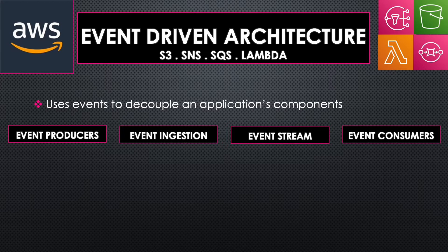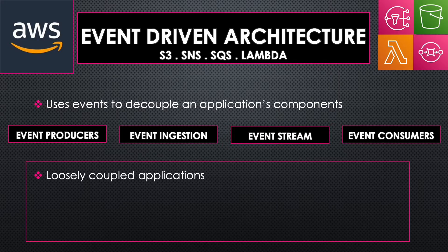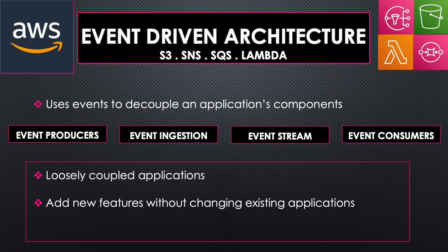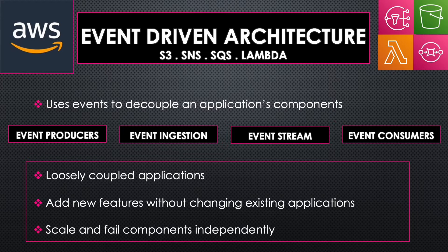You can use various AWS services in place of each of these components, and this type of architecture is used in many use cases because of its key benefits. It helps in building loosely coupled applications, as the dependencies between components are fewer, and changing one service will have less risk of impacting the others. Adding new features is much easier, and you can scale individual components. It is also resilient as it reduces single points of failure.